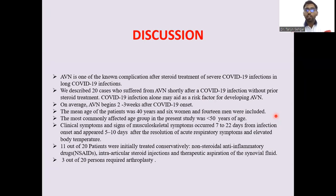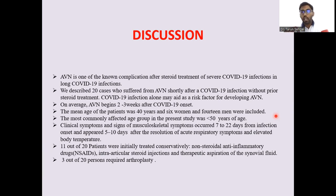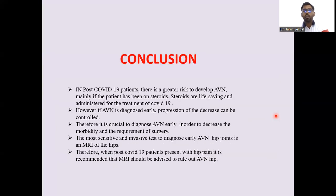Clinical symptoms and signs of the musculoskeletal system occurred 7 to 22 days from infection onset and appeared 5 to 10 days after resolution of acute respiratory symptoms with elevated body temperature. 11 out of 20 patients were initially treated conservatively with non-steroidal anti-inflammatory drugs, intra-articular steroid injections, and therapeutic aspiration of synovial fluid. 3 out of 20 patients required arthroplasty.